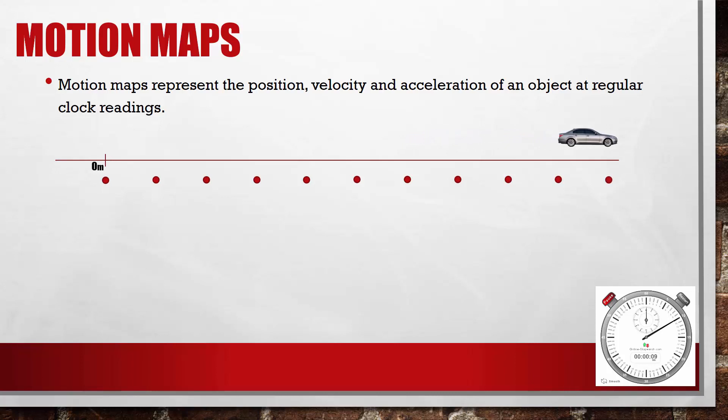So each of these dots represents the position of the car at some time as it moved across the screen, and the amount of time between each dot is one second.